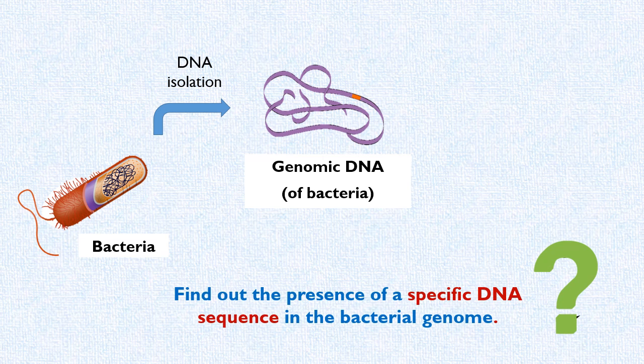Now we want to find out the presence of a specific DNA sequence in the bacterial genome. In other words, we are searching for a gene, or DNA sequence of interest, whose nucleotide composition is already known to us. But we want to find out whether this known sequence is present in bacteria or not.